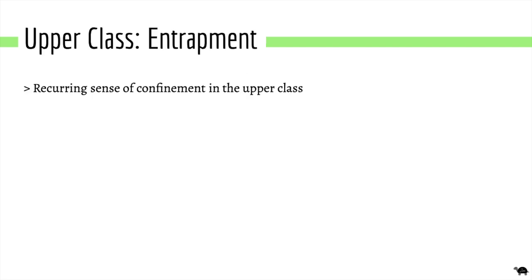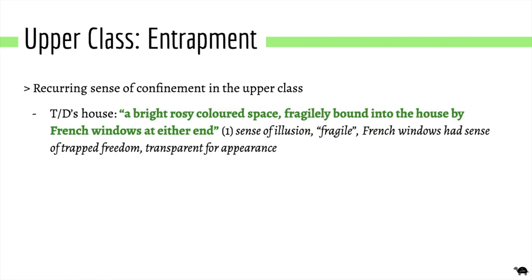Looking at the upper class first, there is a recurring theme of entrapment and confinement. A quote from the beginning of the book describes Tom and Daisy's house as 'a bright rosy-coloured space fragilely bound into the house by French windows at either end.' This reflects a sense of rose-tinted glasses — Tom and Daisy can overlook their problems due to having wealth. The space is 'fragilely bound,' suggesting they are confined but the confinement is weak. The French windows are transparent but do not provide freedom; instead they act as something confining. Essentially, the setting represents their fragile illusion of a happy marriage as members of the upper class.